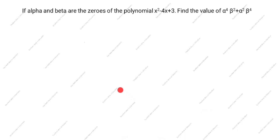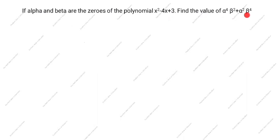Hi friends, welcome to my channel, excellent ideas in education. Today we are going to solve this polynomial problem. This is a very important problem. If alpha and beta are the zeros of the polynomial x squared minus 4x plus 3, find the value of alpha power 4 beta square plus alpha square beta power 4.